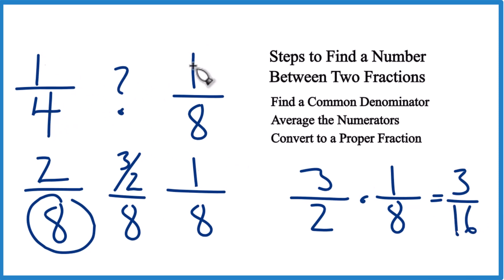The number between 1/4 and 1/8, or you could say 2/8 and 1/8, is 3/16. And you can check that. 3 divided by 2 is 1.5, and if you divide 1.5 by 8, you'll get the same number as when you divide 3 by 16. So you can verify your work.